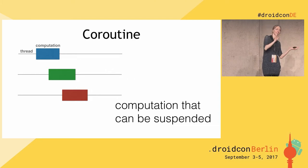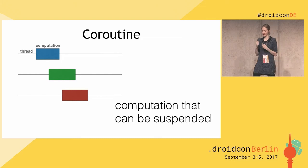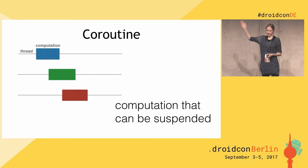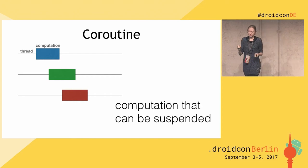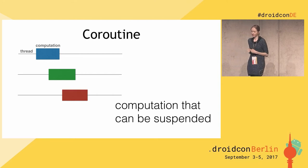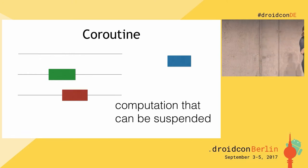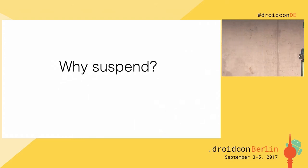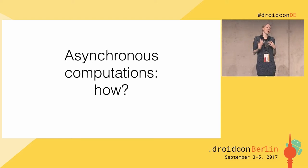We know that a coroutine is similar to a thread. Now let's discuss how they're different and how they interact. The convenient way to think of a coroutine is as a computation that can be suspended. I'll use a line to draw a thread and a block to draw a computation. A coroutine is a computation that can be suspended — somehow we can take these coroutines and put them away from our threads.